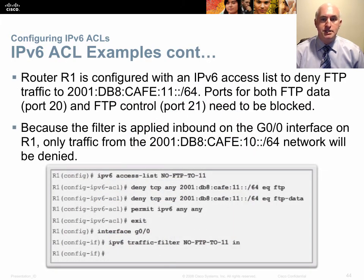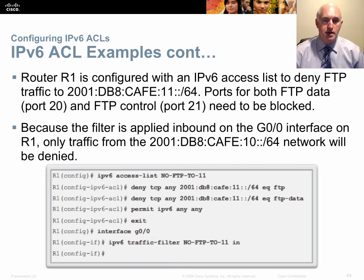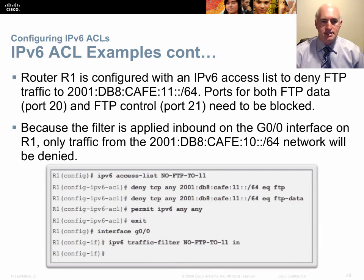When specifying port numbers for TCP with IPv6 ACLs, you can use names like 'ftp' and 'ftp-data' or the port numbers 20 and 21. To check if a name is supported, type a question mark after 'eq'. You can also use 'gt' for greater than or 'lt' for less than, allowing you to filter ranges like everything above or below a certain port number.